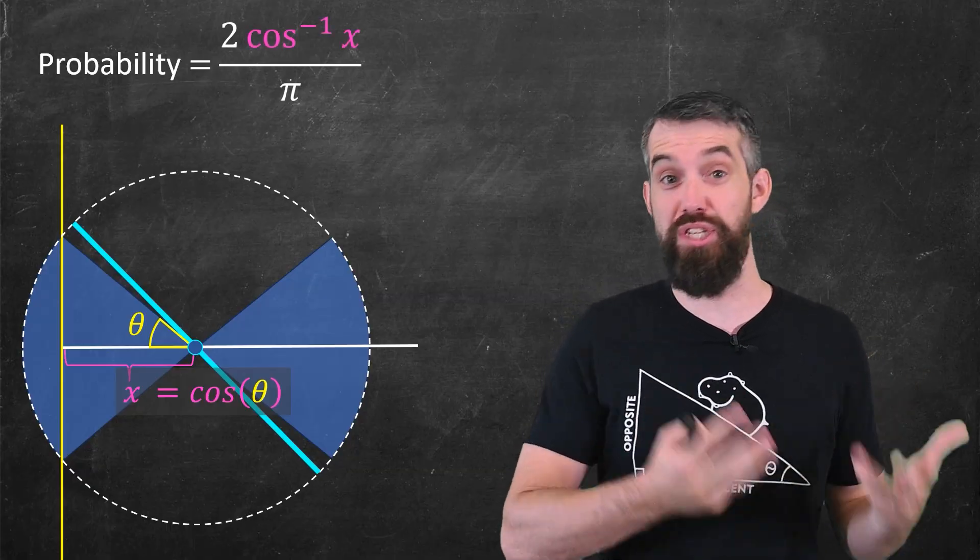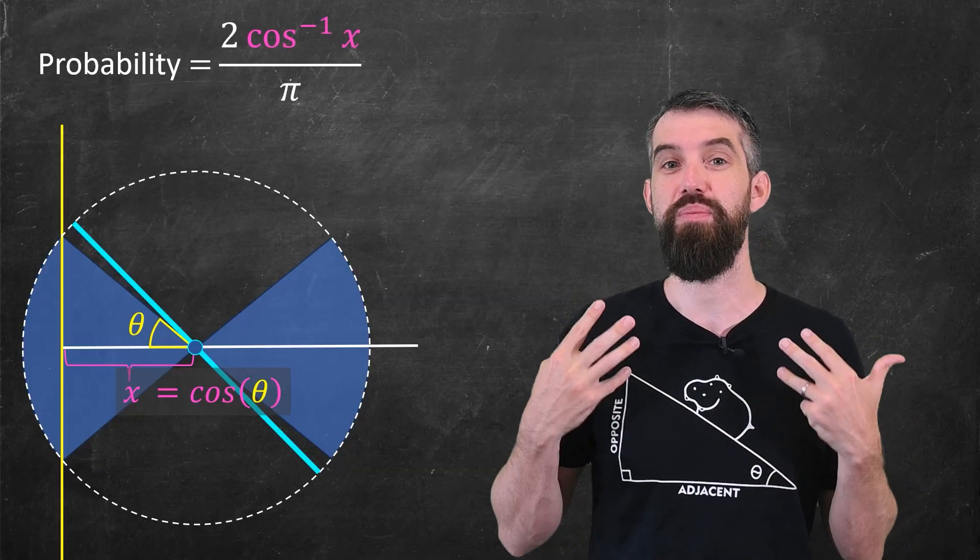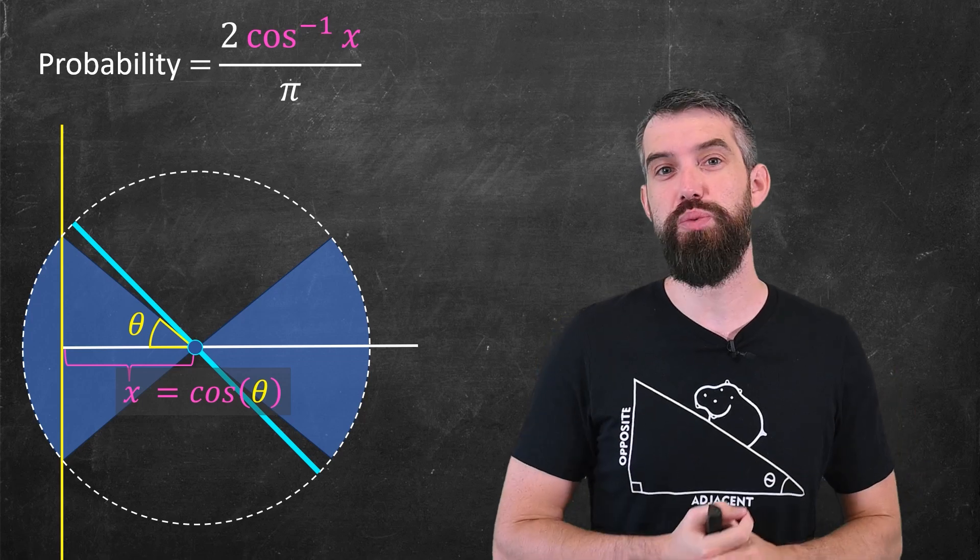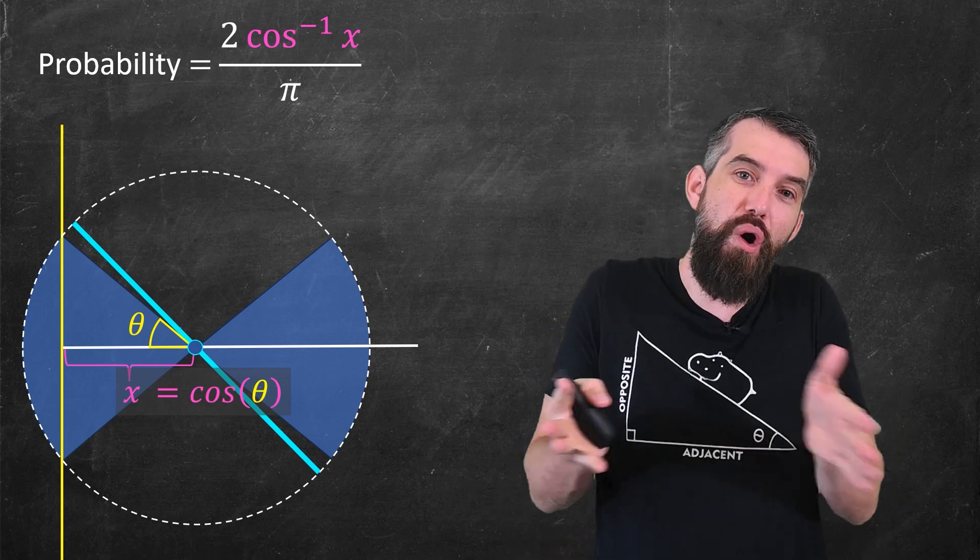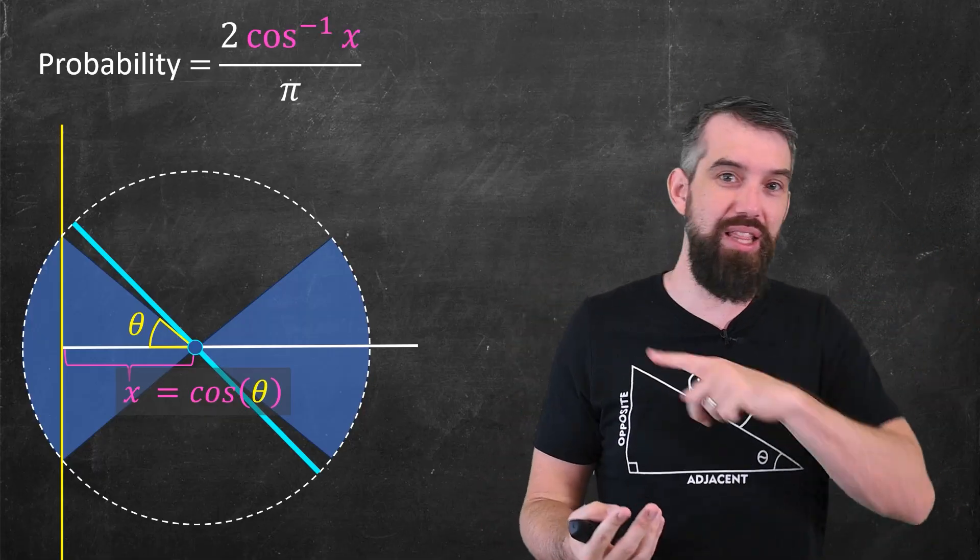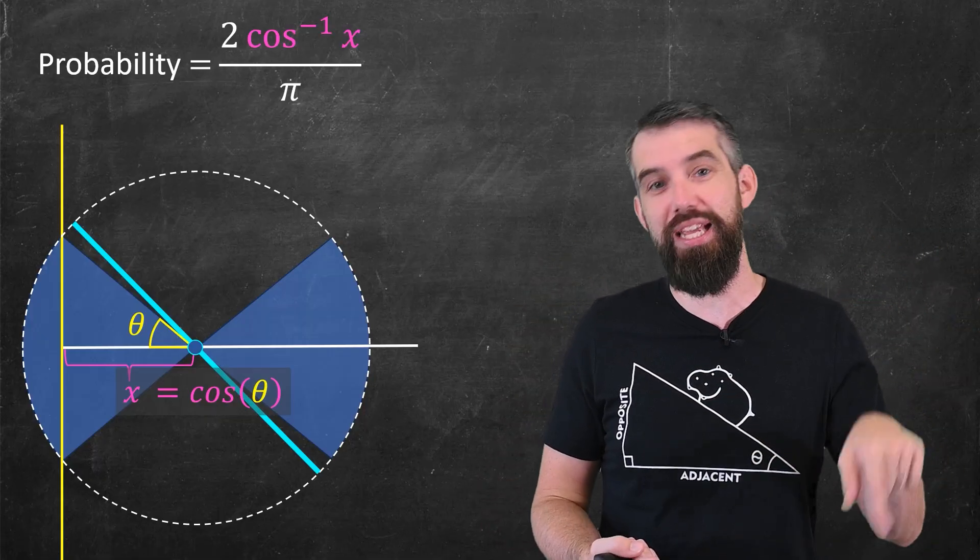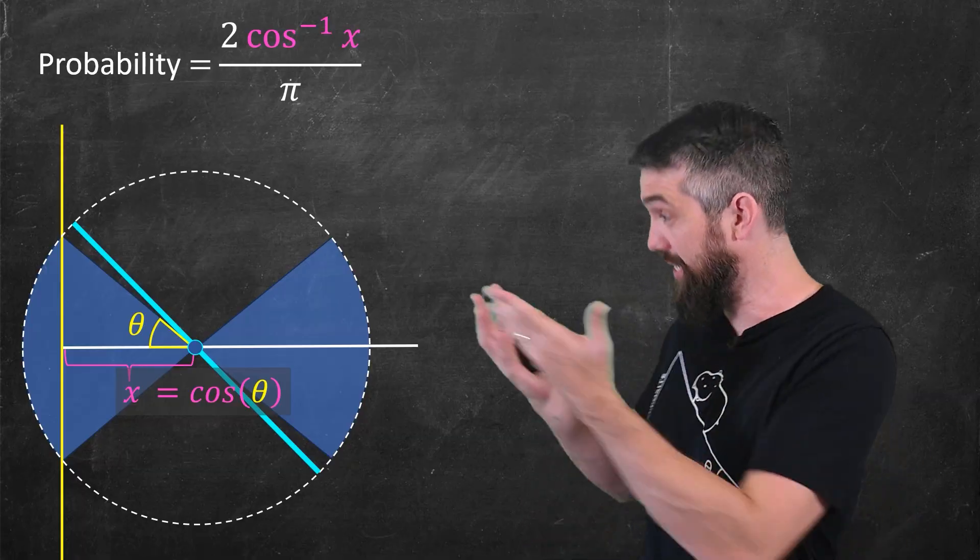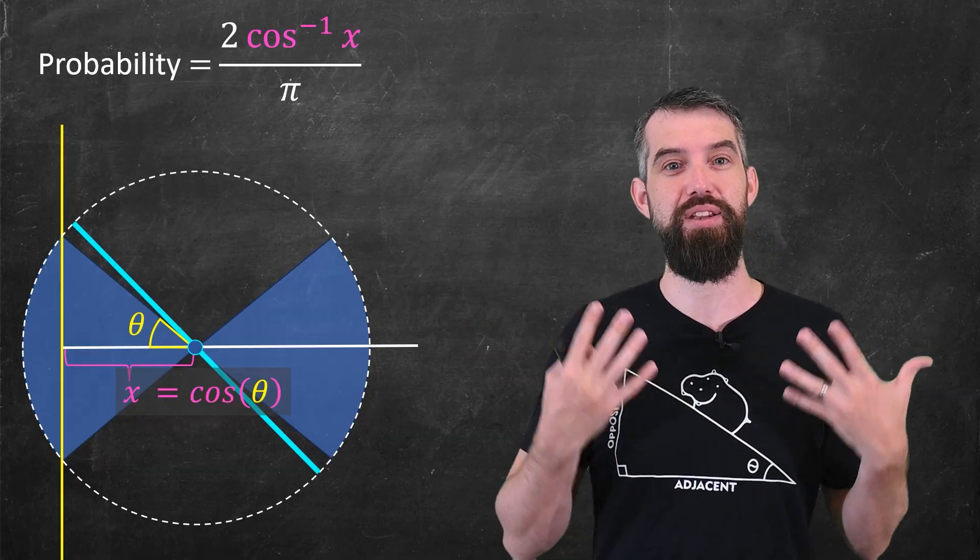And so I replace my probability with 2 times arc cosine of x divided out by pi. So now we have this really nice result. If you know how far away your midpoint is from the line, then you can figure out the probability that if you're allowing all of the possible rotations of it, that you will hit the line. It's this thing, 2 arc cosine of x divided by pi.